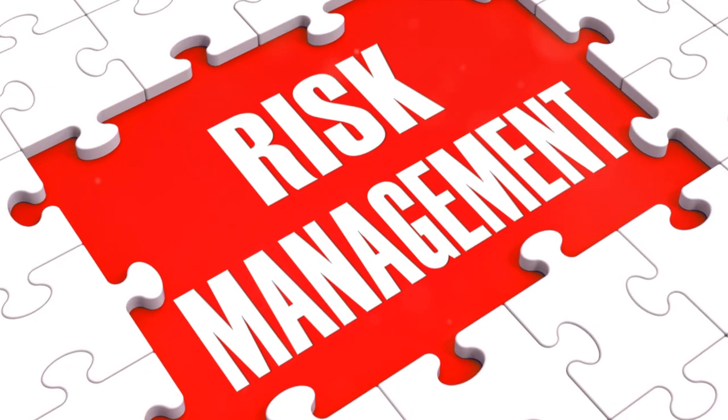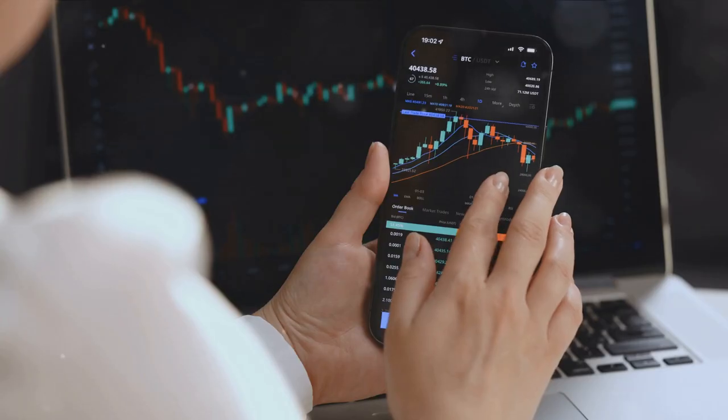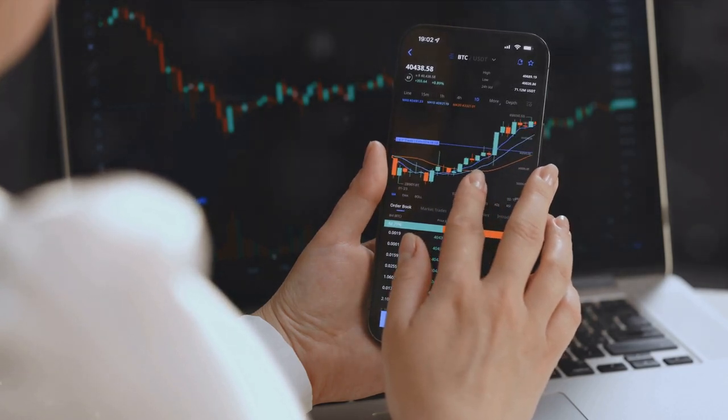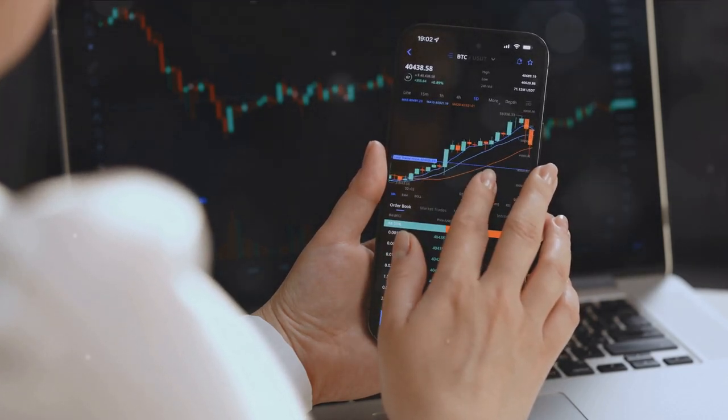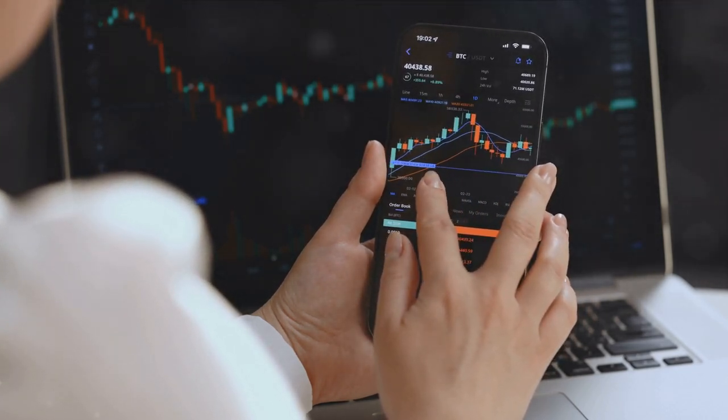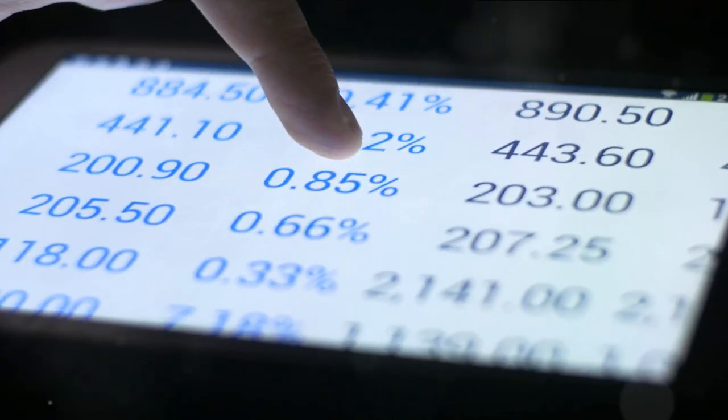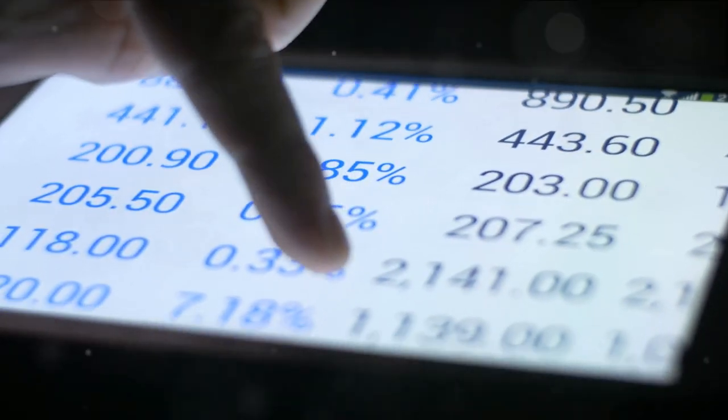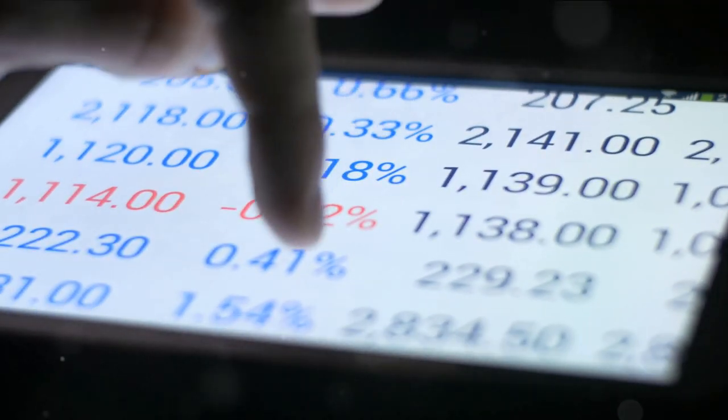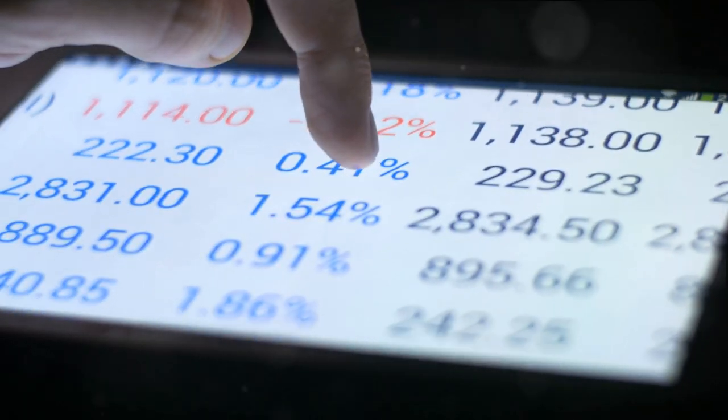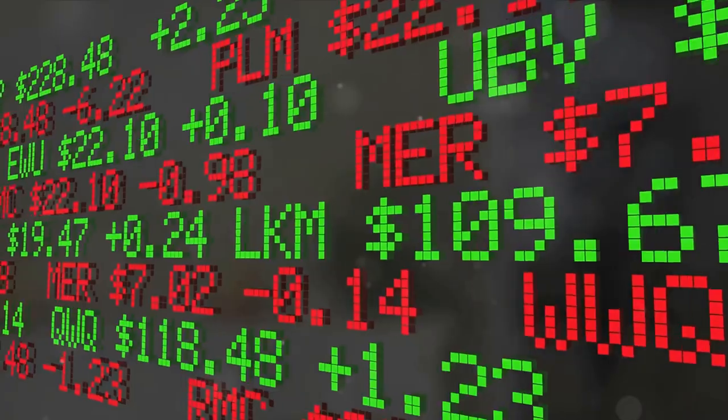Now, every investor has their own level of risk tolerance. Some are risk-averse while others are risk-seeking. The efficient frontier helps each investor identify the portfolio that best suits their individual risk appetite and expected return. To put it simply, if you're on or above this curve, you're doing well. Your portfolio is efficient. If you're below the curve, there's room for improvement. You could be earning more for the level of risk you're taking.